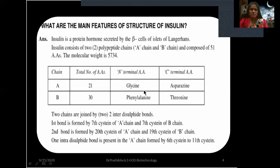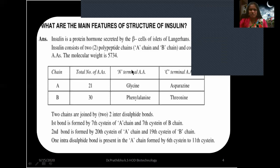The two chains are joined by two inter-disulfide bonds. The first bond is formed by the 7th cysteine of A-chain and the 7th cysteine of B-chain. The second bond is formed by the 20th cysteine of A-chain and the 19th cysteine of B-chain. One intra-disulfide bond is also present in the A-chain, formed by the 6th cysteine to the 11th cysteine.